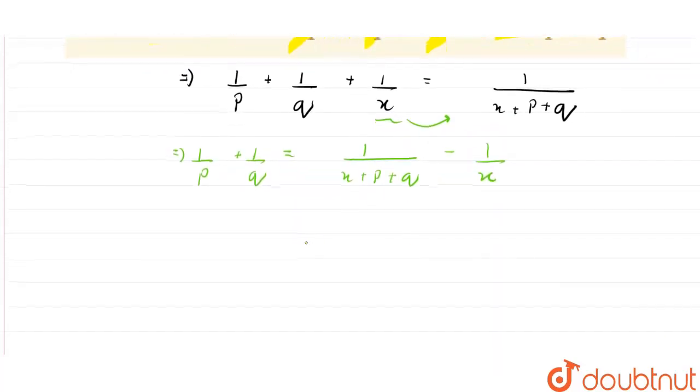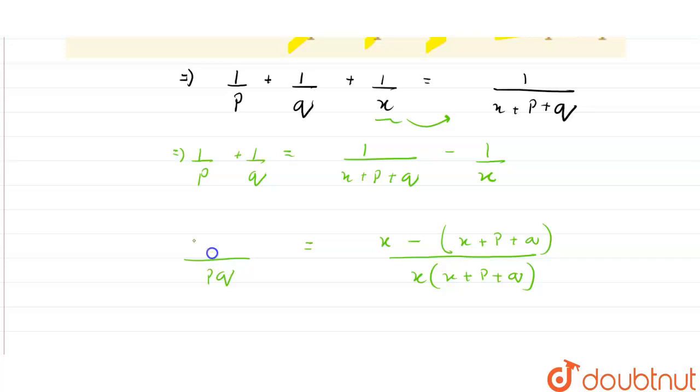If we take the LCM here and there, we get that this is x times (x + p + q), and this will be x here minus (x + p + q), and this will be pq here and here p + q.